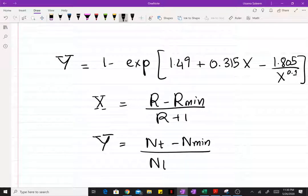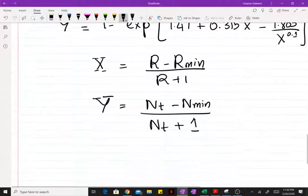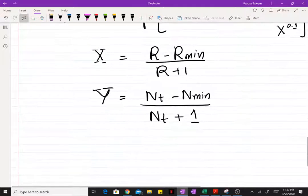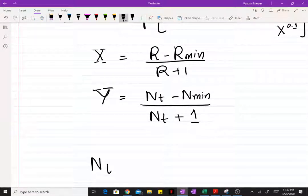Over number of stages plus 1. So if I use this equation, I found the number of theoretical stages to be around 11.